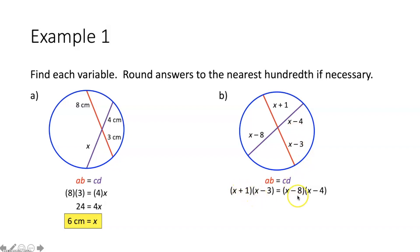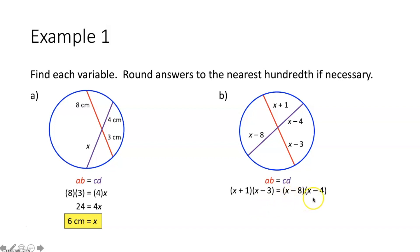Now all I have to do is solve for X. On each side I have a binomial times a binomial, so I need to FOIL on each side. Multiplying out the left side: X squared minus 3X plus 1X minus 3, combining like terms gives X squared minus 2X minus 3. On the right side: X squared minus 4X minus 8X plus 32, combining gives X squared minus 12X plus 32. I subtract X squared from each side — they cancel — leaving negative 2X minus 3 equals negative 12X plus 32. Adding 12X to both sides, adding 3 to both sides, then dividing both sides by 10, I get X is equal to 3.5.